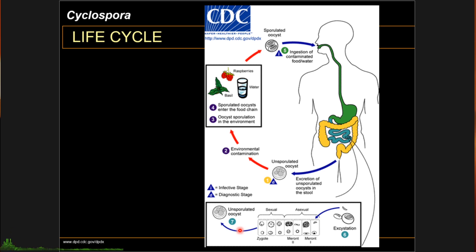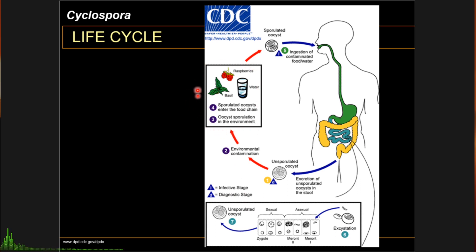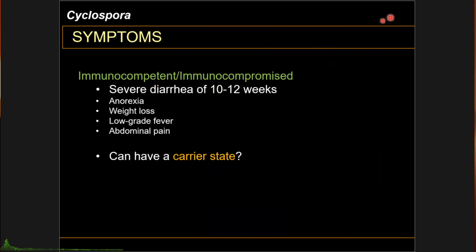Unsporulated oocysts are not infectious. They need to sporulate in the environment for about one to two weeks to become infective to a host. Once unsporulated oocysts contaminate fruits, vegetables, or even drinking water, they may sporulate there. Once sporulated, they become infective, and if ingested by the human, the life cycle is complete.